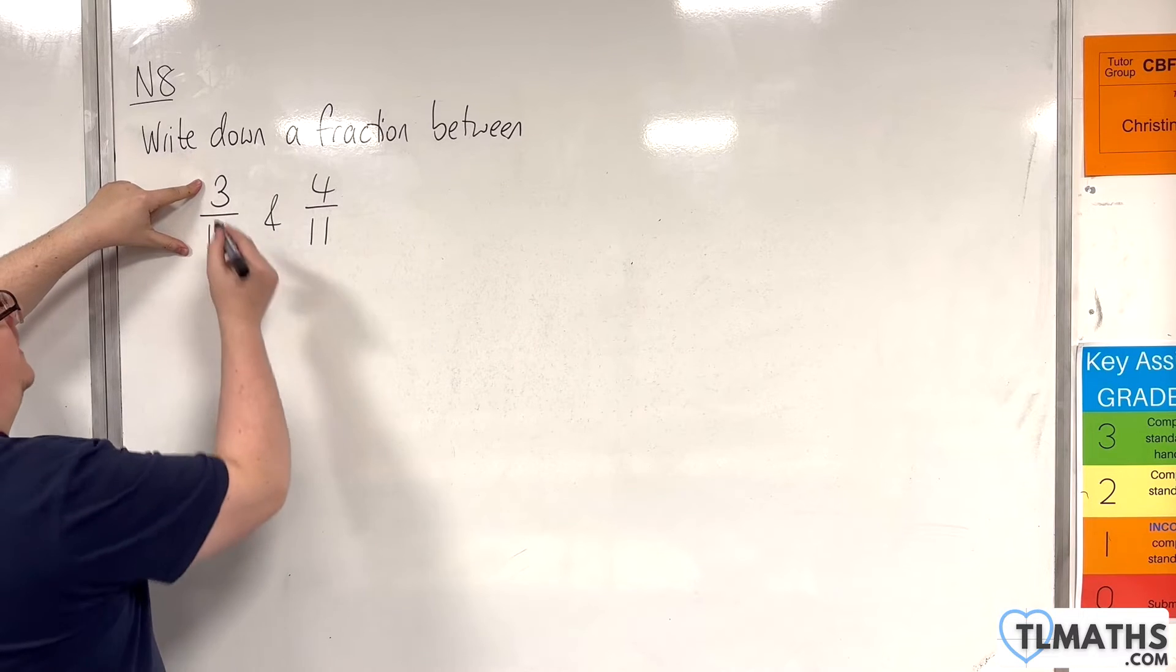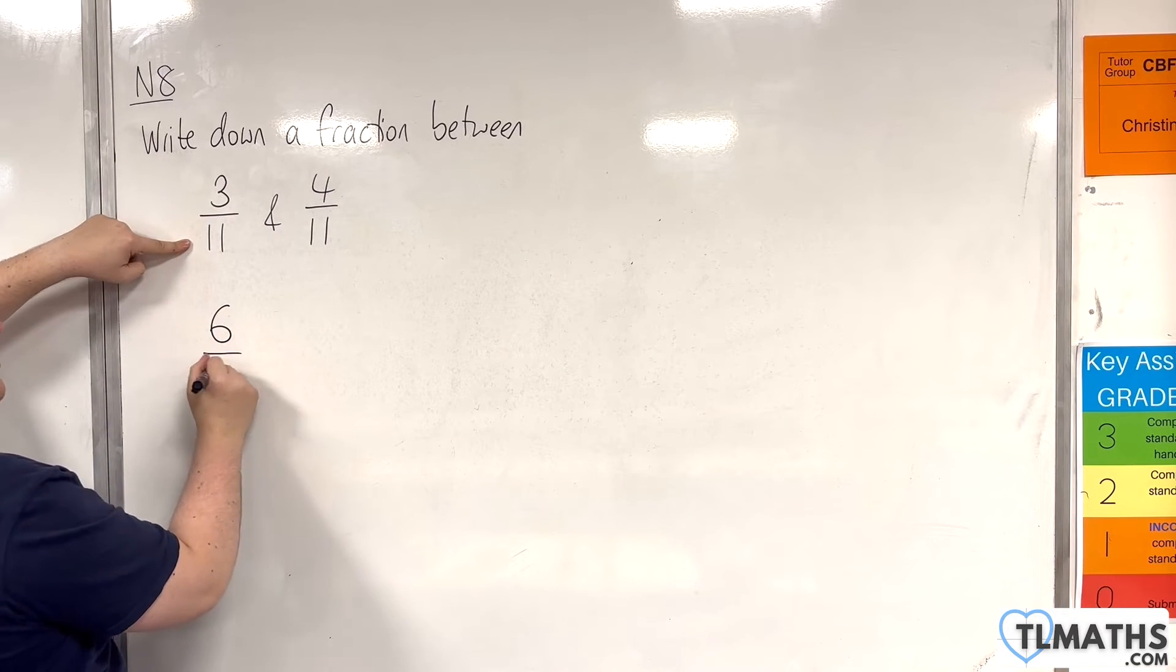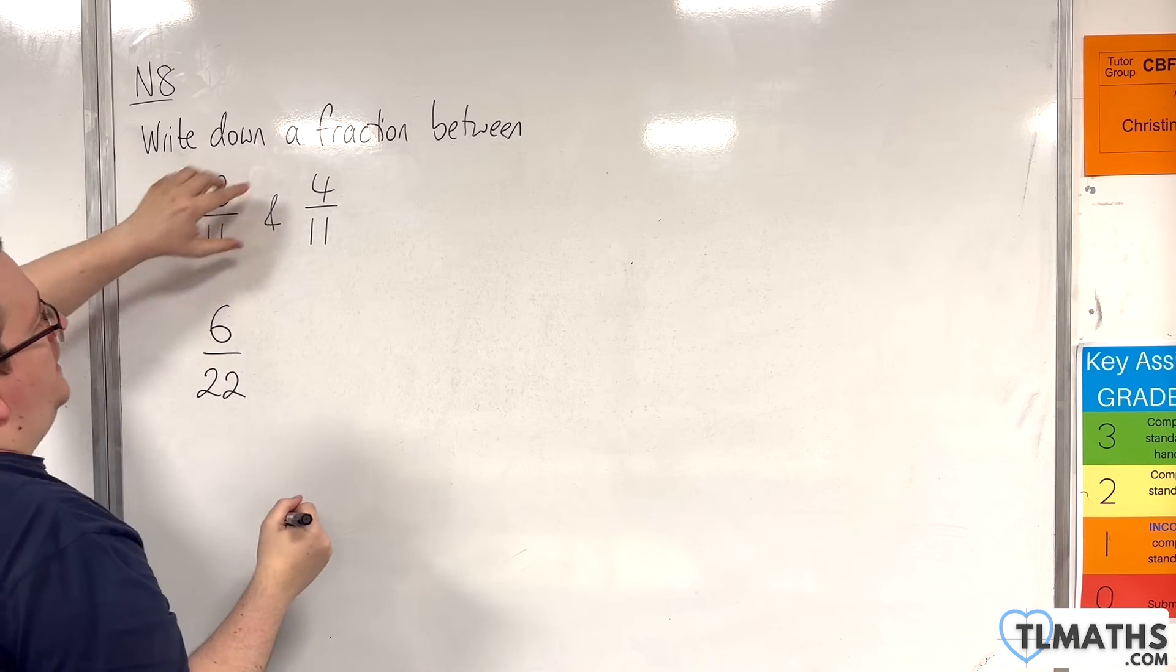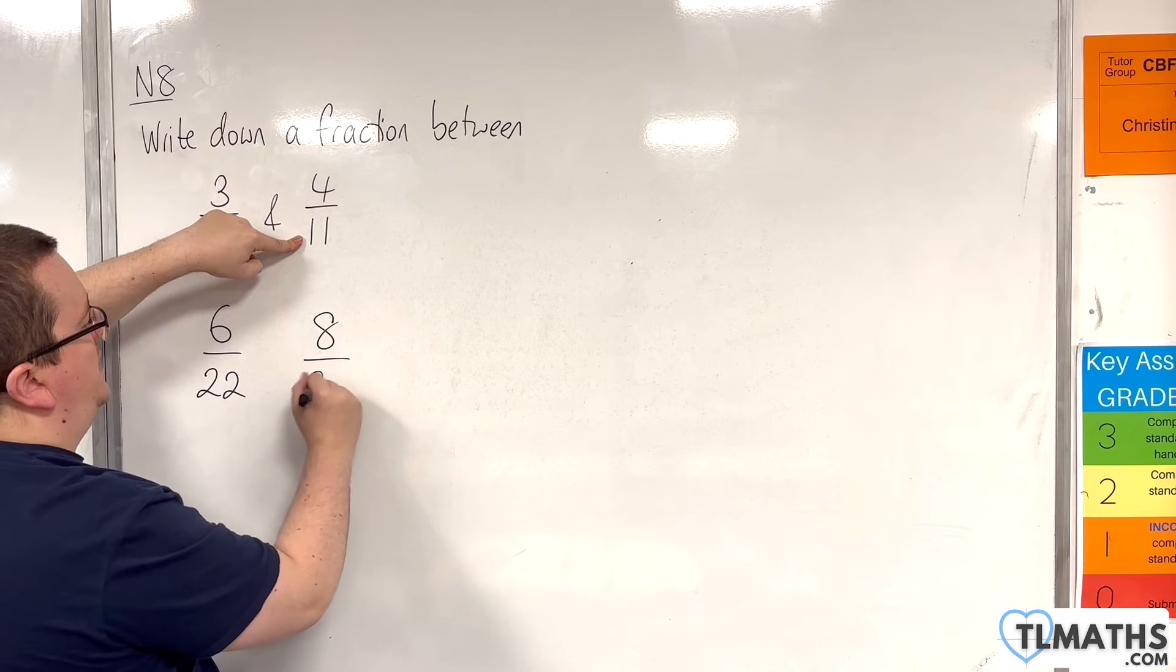So, if I do that, I get 3 times 2 is 6, 11 times 2 is 22. Here I've got 4 times 2 is 8, and 11 times 2 is 22.